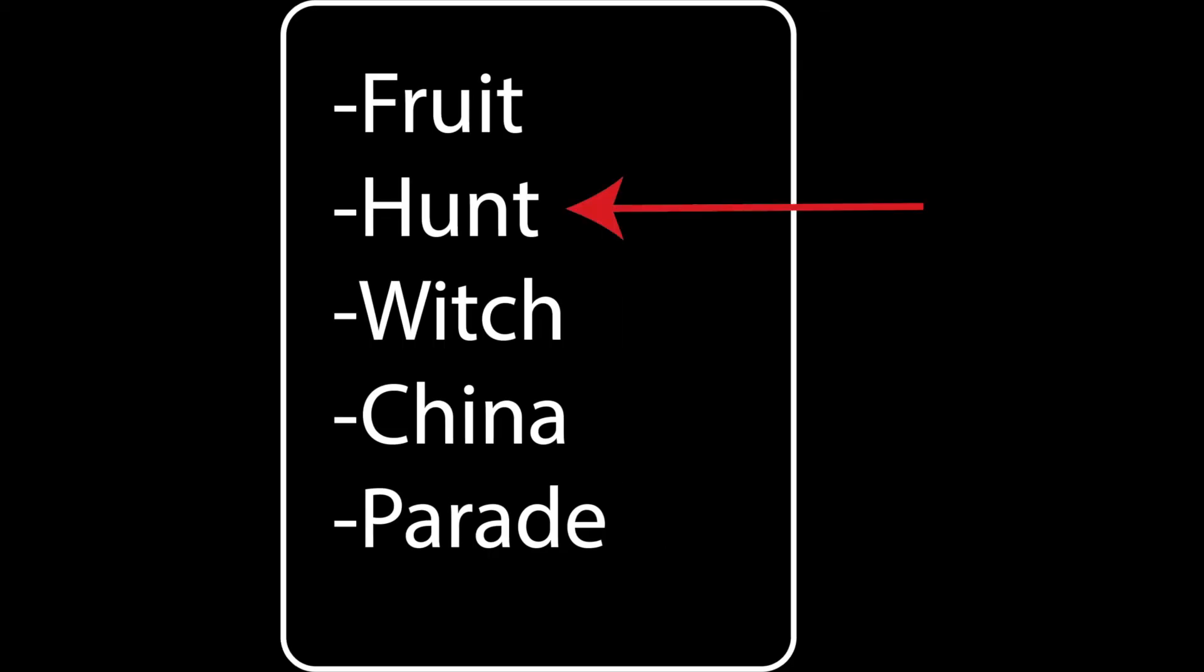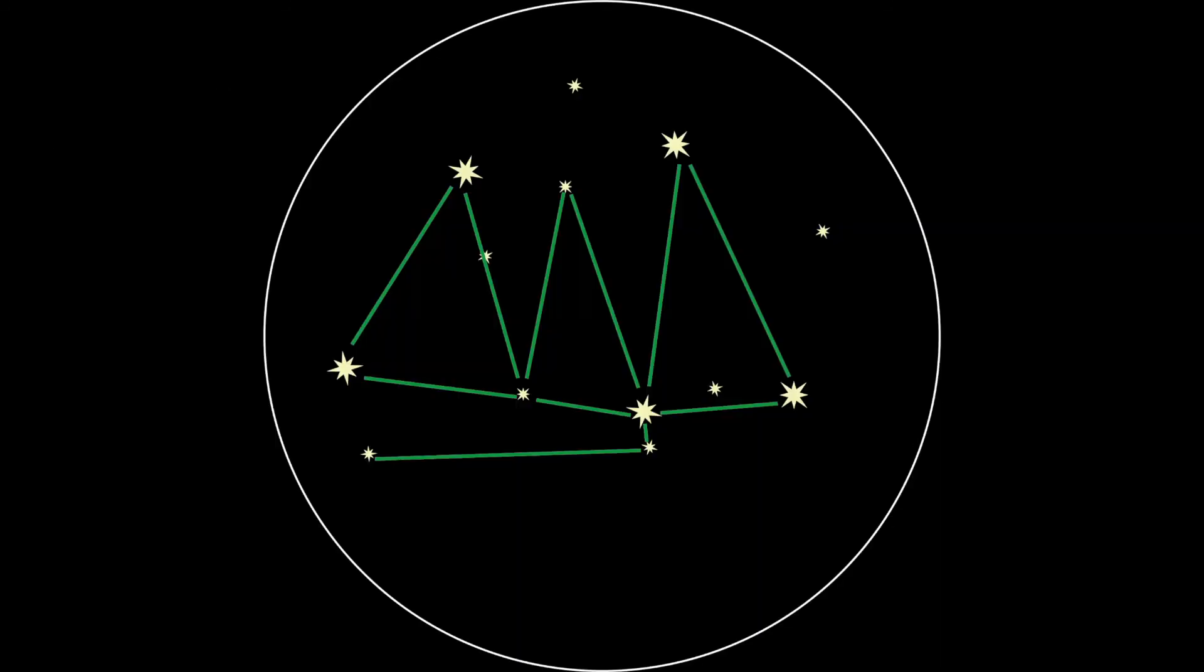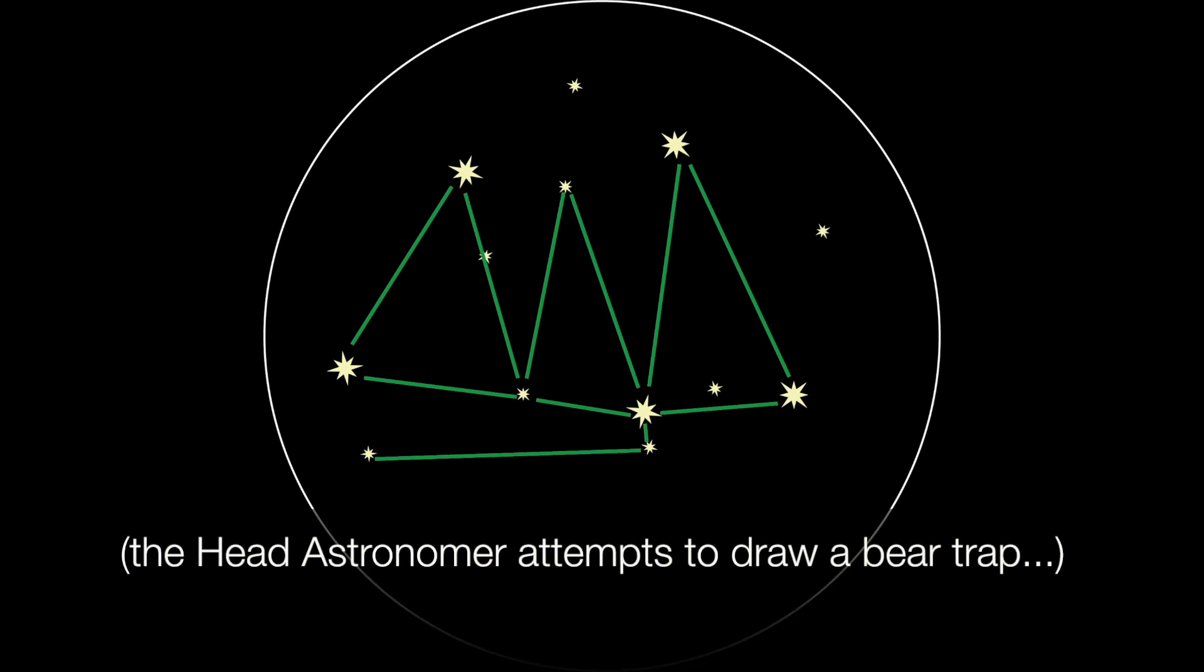Each round, one player becomes the head astronomer who selects the topic and writes this topic down on separate cards. The catch is that one card will not have the topic written on it. It will instead say Con Artist. The head astronomer will also illustrate a constellation that is related to the topic on a single star card and display it face-up for all players to see.